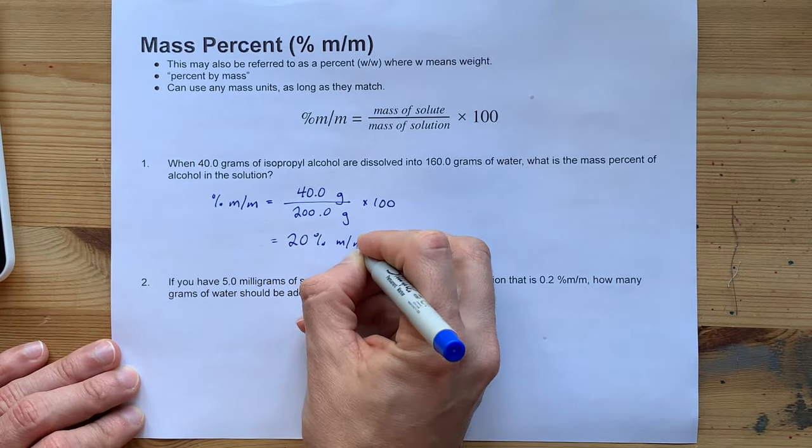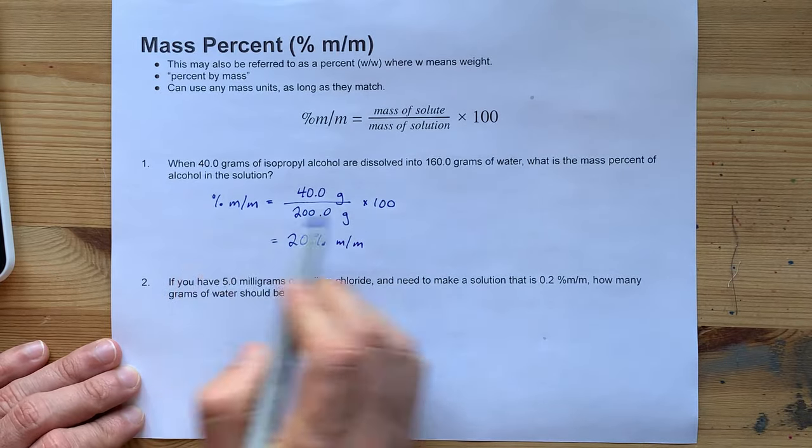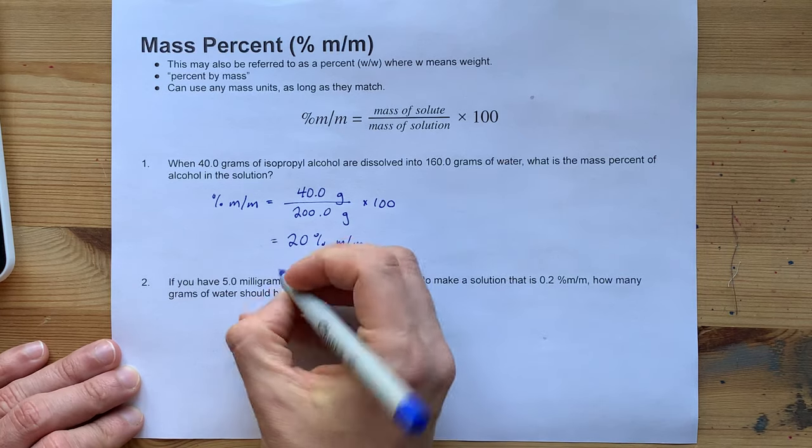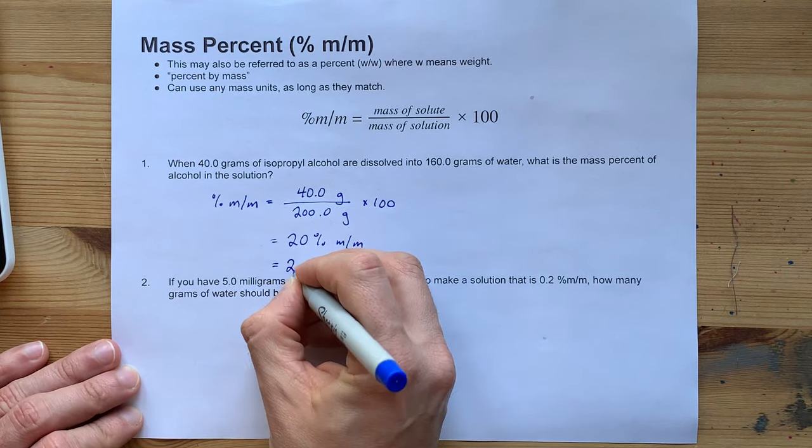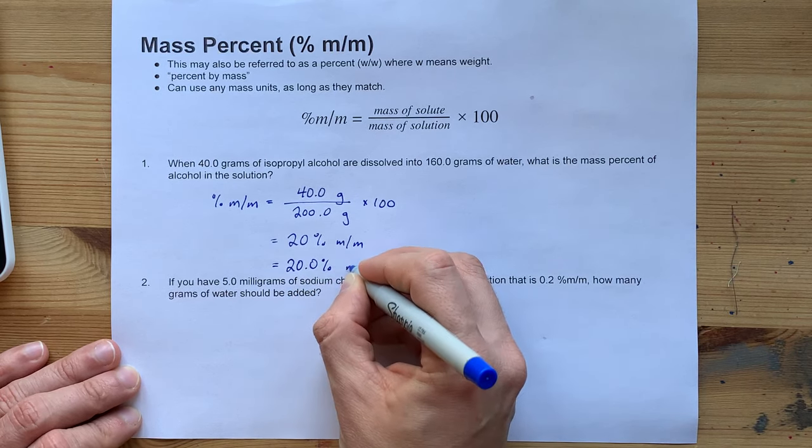Your units are m over m, and I'm just going to look at my significant figures. There's three significant figures here, four here. So this needs three significant figures. We'll make that 20.0% since we do know it to that accuracy.